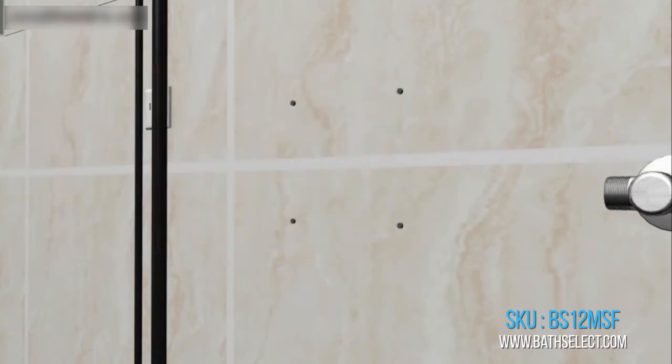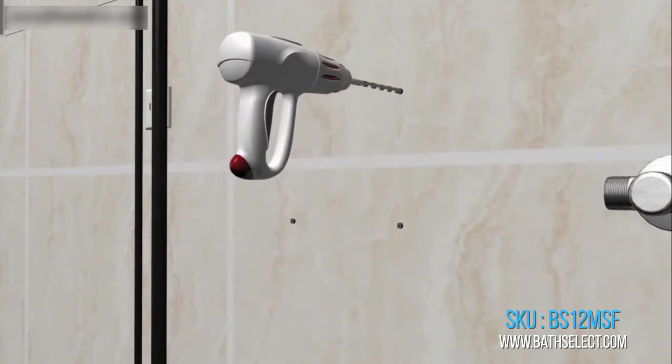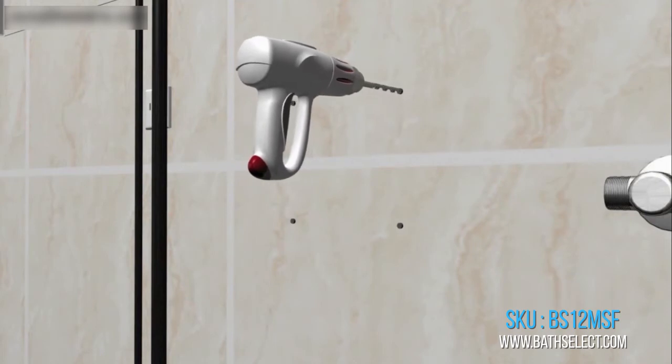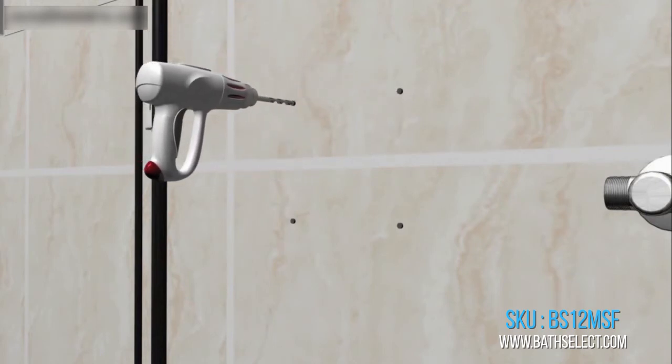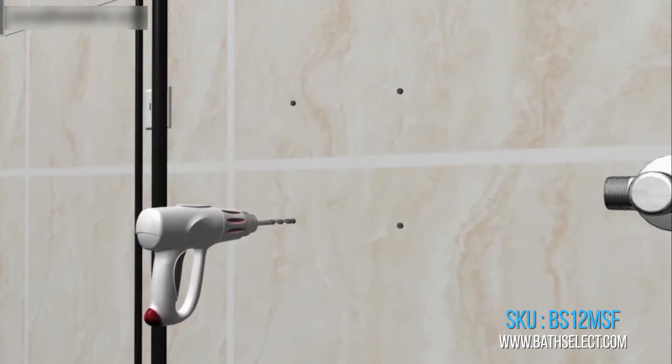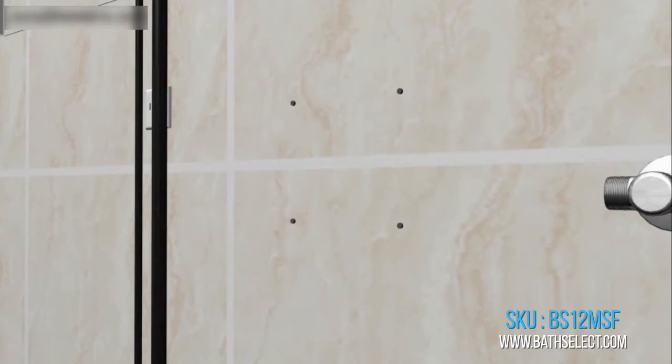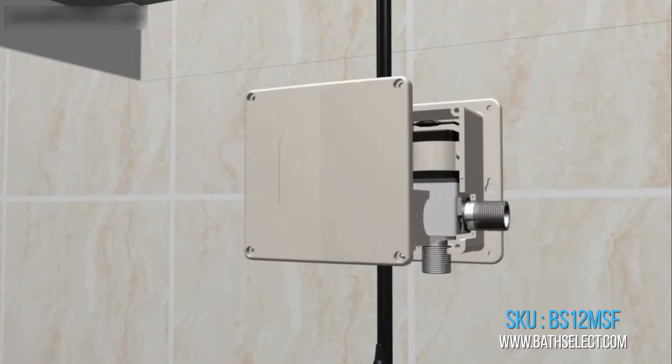Naples Oil Rubbed Bronze Commercial Motion Sensor Faucet Specifications: Type - Motion Sensor Faucet; Finish - Oil Rubbed Bronze; Installation - Deck Mount; Number of Holes - Single; Battery - 4 AA Batteries not included; Weight - 4.5 pounds. Suitable for commercial and residential use.